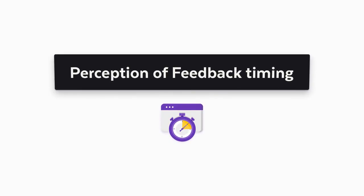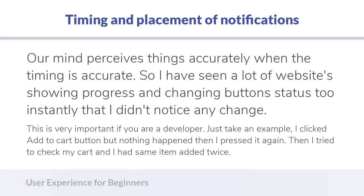Let's talk about the timing and placement of notifications, or any interaction a user is doing on your website. Our minds are going to perceive interactions accurately when their timing is accurate or perfect. I have seen a lot of websites where they are showing progress bars, or when I click some button the status doesn't instantly change, or sometimes it changes so abruptly that I don't notice any change. There must be proper timing and placement of these notifications so the user's mind can easily perceive them.